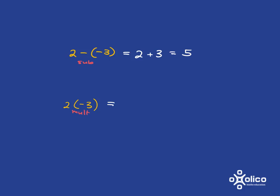In contrast, here we're in the multiplication world, and so we're going to use our rule: a positive multiplied by a negative gives me a negative. So the answer is going to be negative, and 2 times 3 is 6.